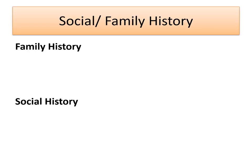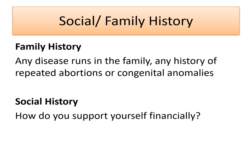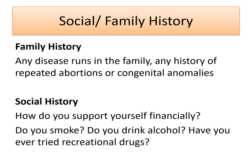For social and family history, we can ask: Is there any disease that runs in the family? Any history of repeated abortions or congenital anomalies in the family? How do you support yourself financially? Do you smoke? Do you drink alcohol? Have you ever tried any recreational drugs?